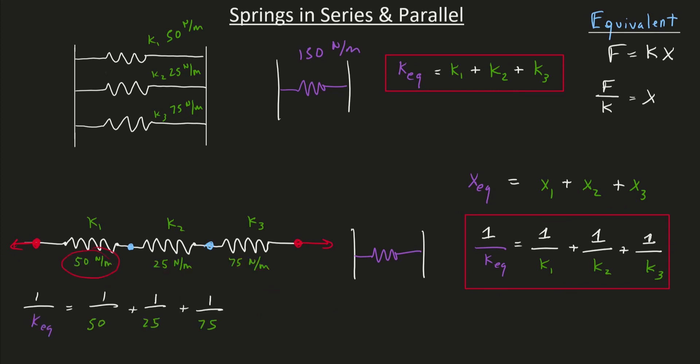So if I had these three stiffnesses here, and I wanted to bundle this entire series spring system into one spring that acts the same way, it moves with the same total displacement, and it creates the same force, we would just plug and chug this equation right here. And if we do that math, we'll get 13.64 newtons per meter. And that would be the stiffness of our equivalent spring here.